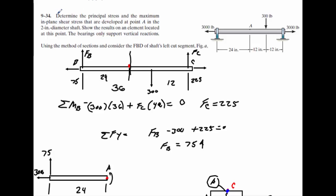This is problem 9-34. Here you're going to determine the principal stress and maximum plane shear stresses developed at point A in the 2-inch diameter shaft. Show the results on an element located at this point. The bearings only support vertical reactions, so these bearings do not support any load this way, only up and down.